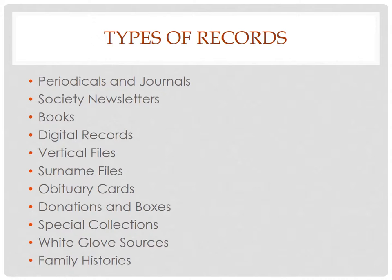There are lots of different types of records that can be used for genealogical research. Periodicals, journals, and society newsletters are a great resource — if you've not looked at different societies around the country and the publications they have, you're really missing out. There are books, digital records, vertical files, surname files, obituary cards, donations and boxes of things that families have donated to different archives, special collections, white glove type places, and family histories. There are lots and lots of kinds of records, and we're going to talk about each one of these.